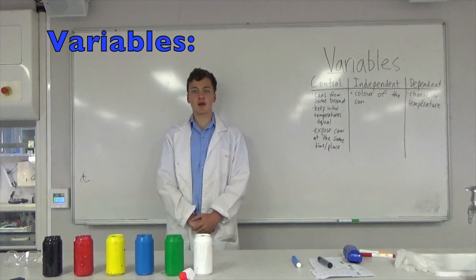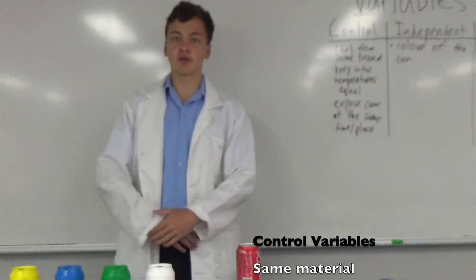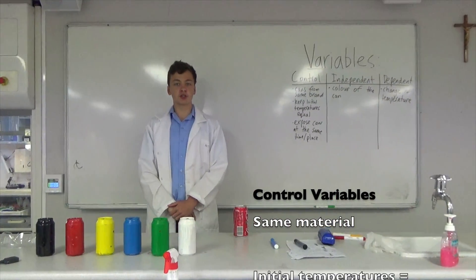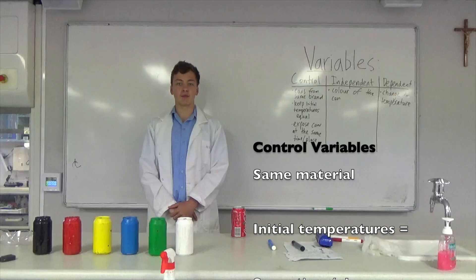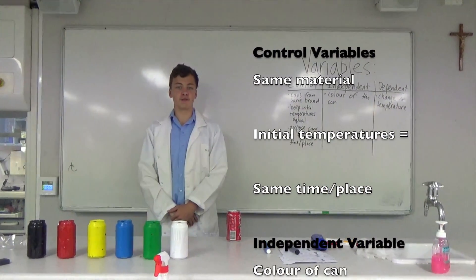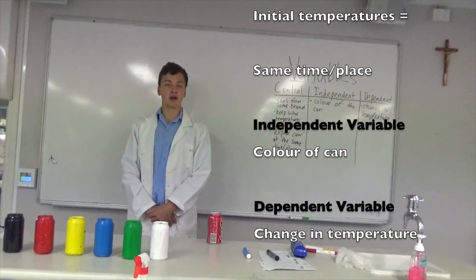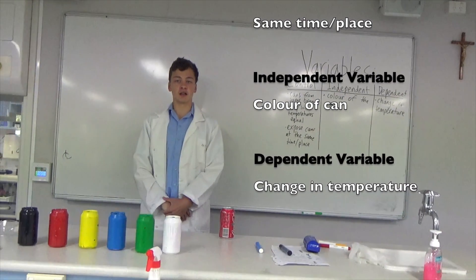In order to keep the experiment fair, we will ensure that the cans are from the same manufacturer. This will allow us to guarantee that the material of each can is the same. We will also ensure that the initial temperatures of each can are the same when the experiment commences, so that no colors end up getting a head start or a disadvantage. Also, the cans will be put in the exact same environment when exposed to the sun, allowing us to observe a fair test of heat absorption.